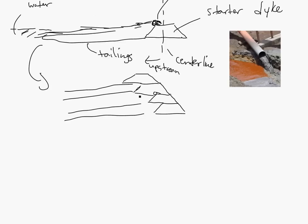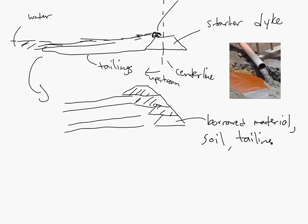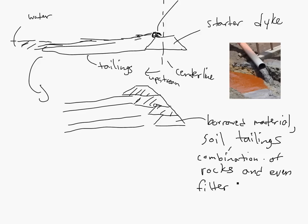You can see this one doesn't use too much material. This material is either borrowed material - soil, or it could even be tailings, or a combination of rocks and even filters, geo or synthetic materials. I'll explain those in another video. So that's basically upstream.